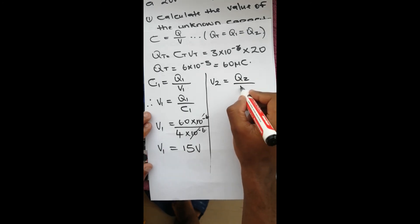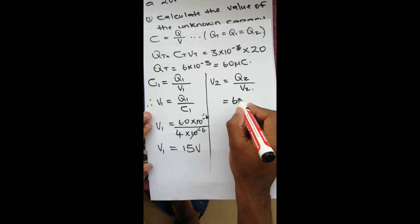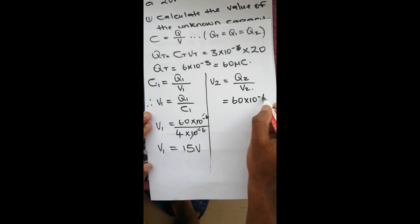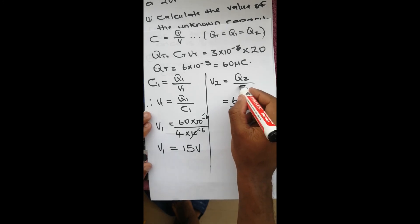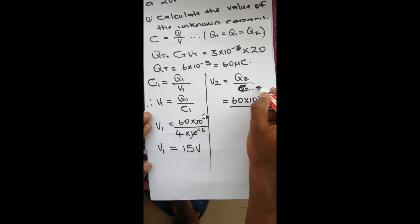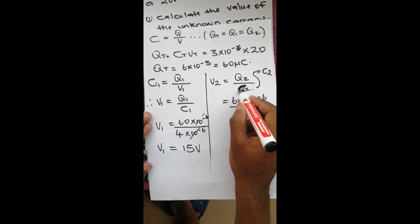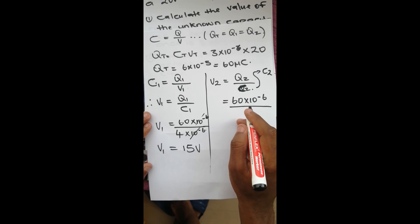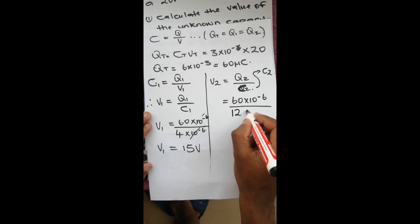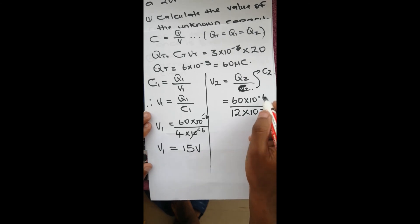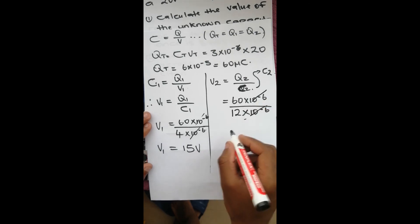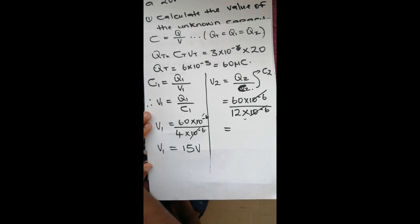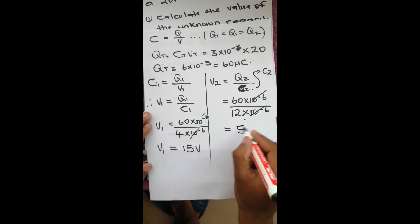For V2, using the same formula: V2 equals Q2 over C2. Q2 is 60 times ten to the power negative six, and C2 we calculated as 12 times ten to the power negative six. These cancel out and we are left with 60 divided by 12, which is 5 volts.